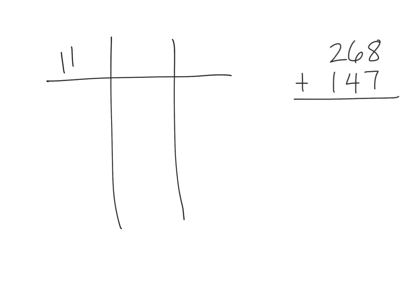We're going to start with a place value chart, so we've got our hundreds, tens, and ones, and I'm going to model 268 inside that place value chart. My 268 is going to look like this: there's my 200, and then there's my 60 because I've got six tens, and then eight is going to look like that. So there is my 268.